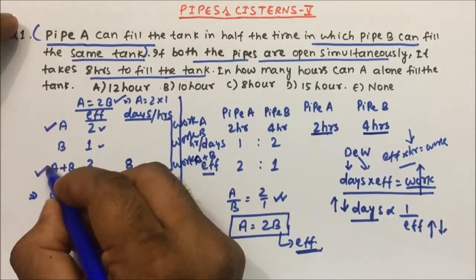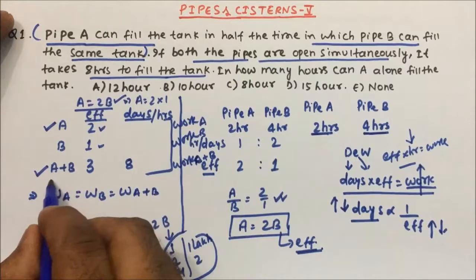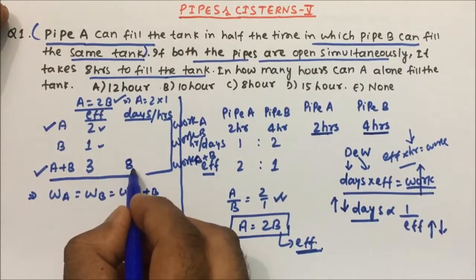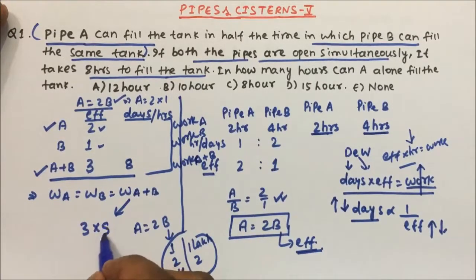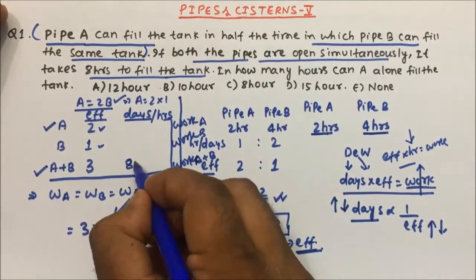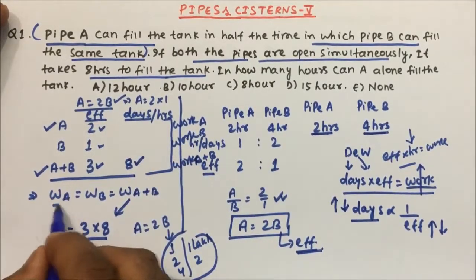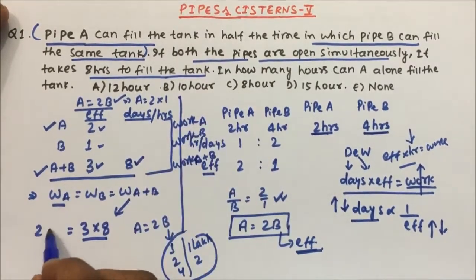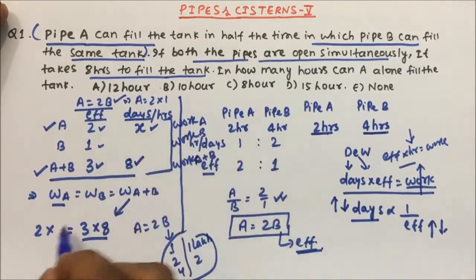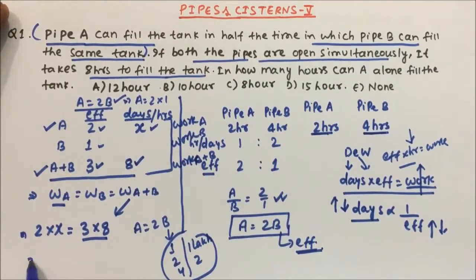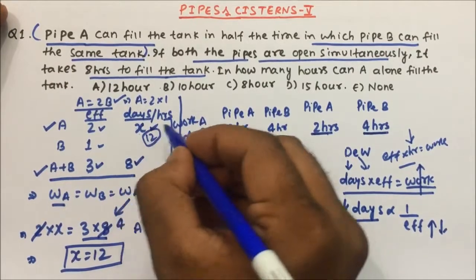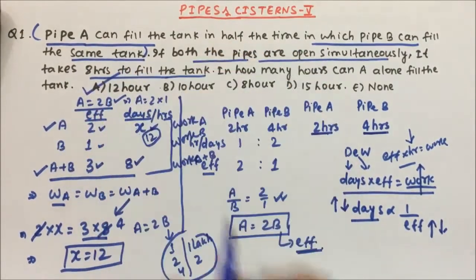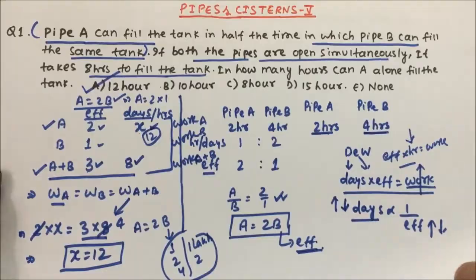We compare A and A+B because A+B data is given. Work of A+B = 8 hours × efficiency 3 = 24. For A alone, efficiency is 2 and time is x hours, so 2×x = 3×8. Solving: 2x = 24, so x = 12. That means Pipe A alone will take 12 hours to complete the work. Option A is the correct answer.